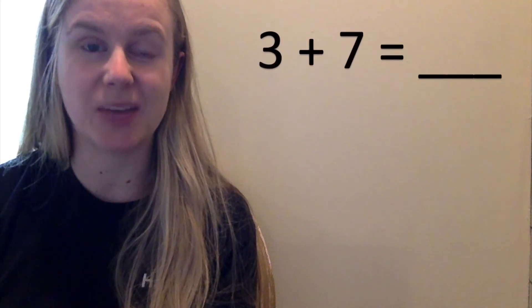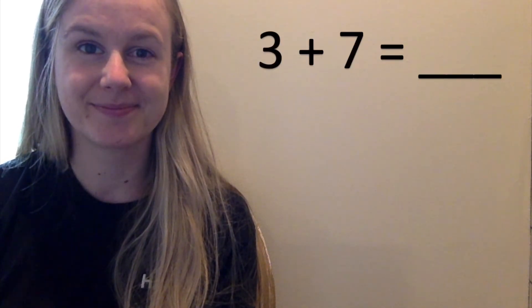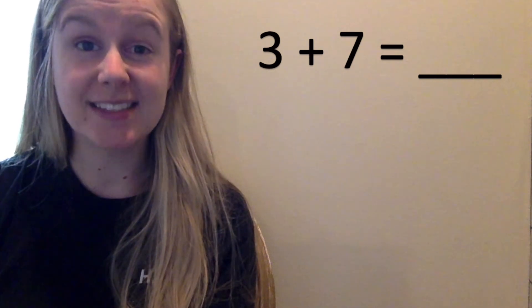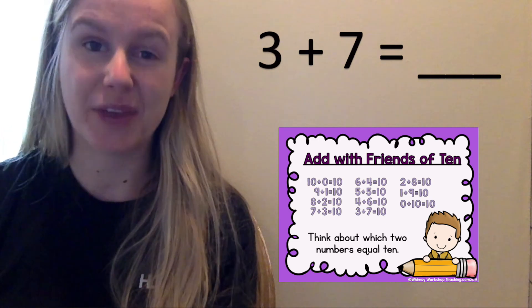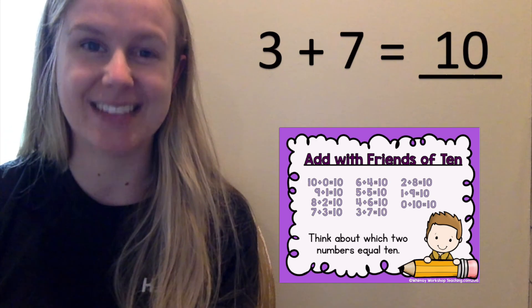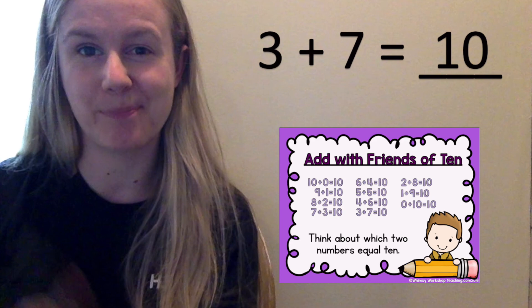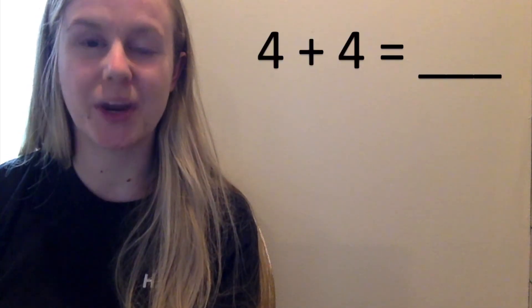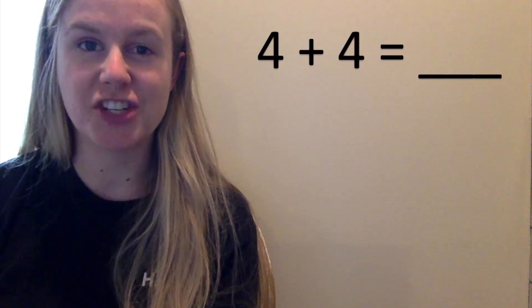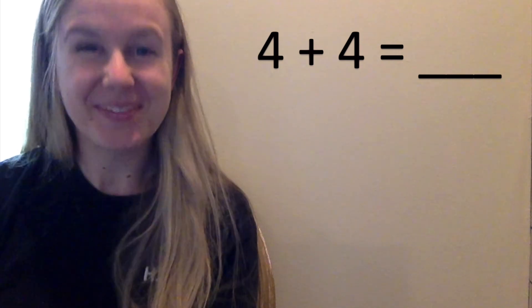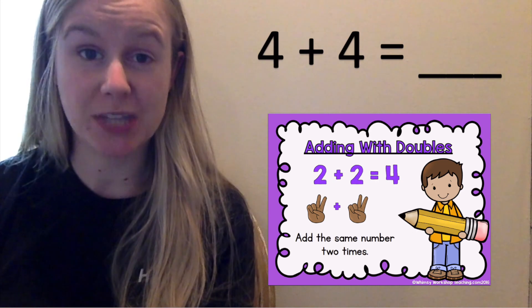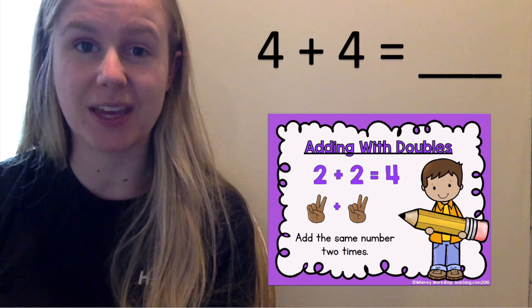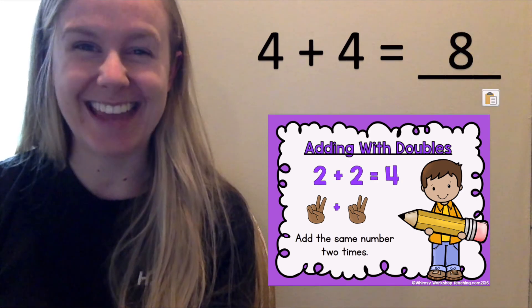Which strategy can we use for this equation? Three plus seven equals blank. That's right — three and seven make ten, so we can use add with friends of ten. Three plus seven equals ten. We know that in a snap. Four plus four equals blank. Which strategy can we use to solve this one? That's right — adding with doubles, because we're adding the same number two times. Four plus four equals eight. Nice job.